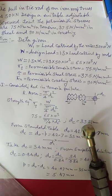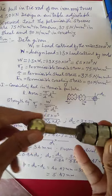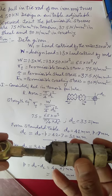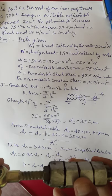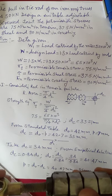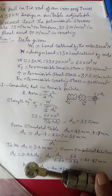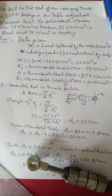Now the question arises: why do we take the design load? This is a turn buckle — in addition to tension, this rod is also subjected to torsional stresses. When a member is subjected to more than two forces and the value of one force is known, we take the design load because in actual practice it is subjected to more than the applied load. For safety we take 30 percent more, known as the design load, to avoid failure. So W = 65 × 10³ N, σt = 75 N/mm², τ = 37.5 N/mm², and crushing stress = 90 N/mm².